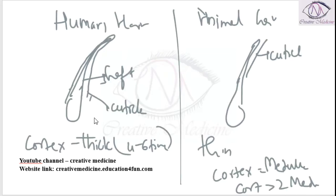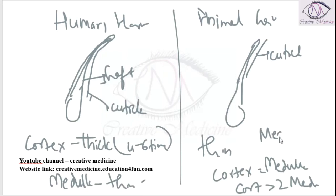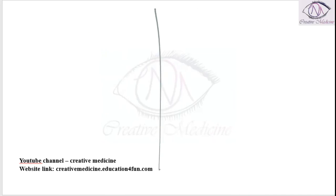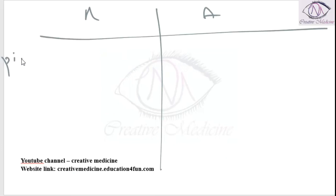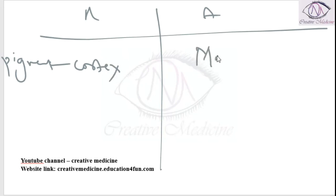The medulla is thin or may be absent in human hair. The medulla is always present, thick, and as big as the cortex in animal hair. Pigment granules are more concentrated in the cortex than the medulla in human hair, whereas pigment granules are heavily concentrated in the medulla in animal hair.